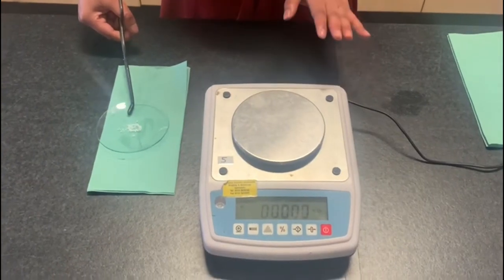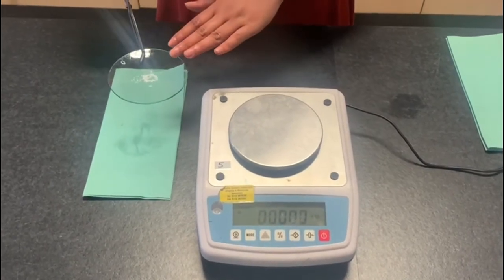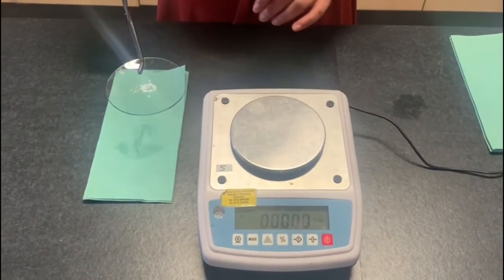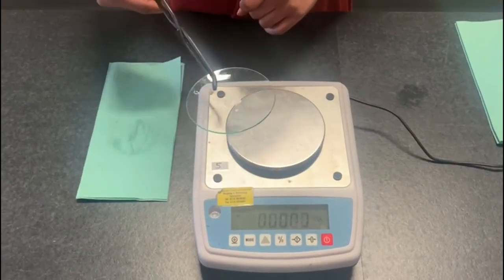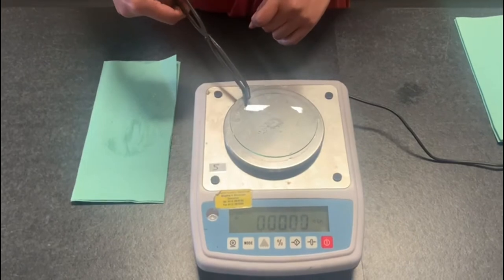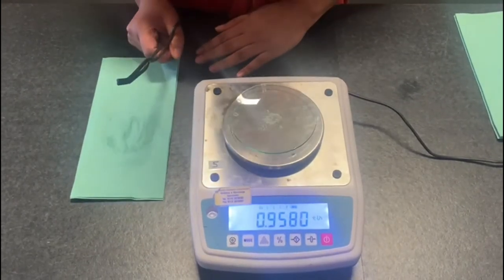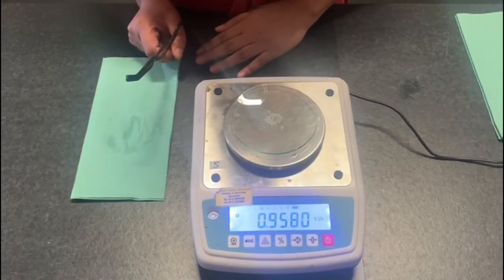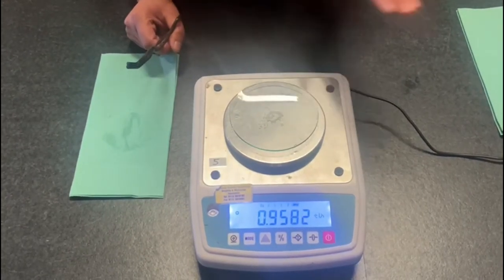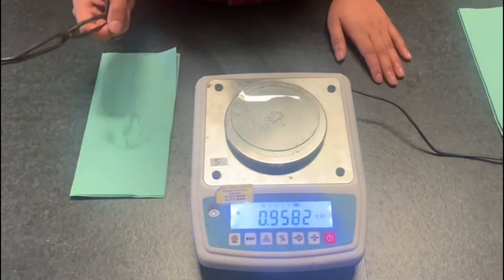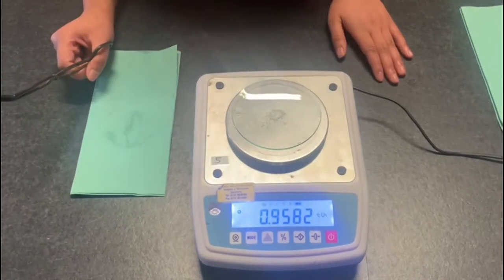Okay we now need to measure the mass of both the dissolved solid and the watch glass but we need to make sure that we start off with the balance on zero. Okay that is 0.958 so we need to record that value onto our table and we need to calculate the difference.